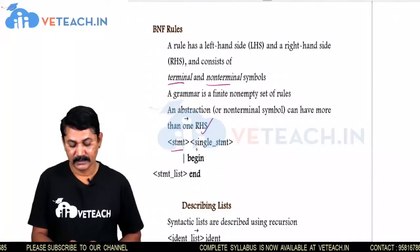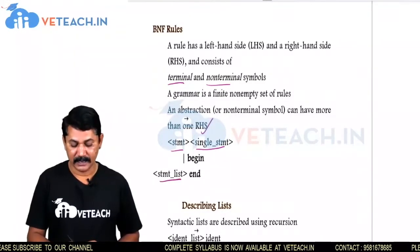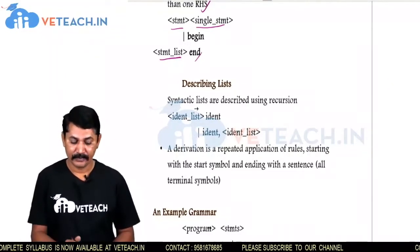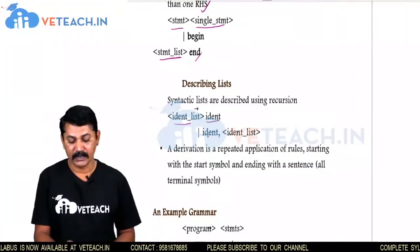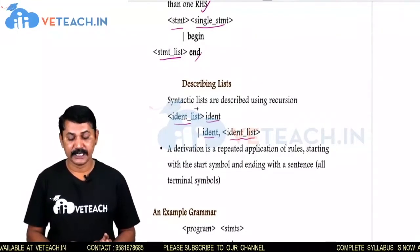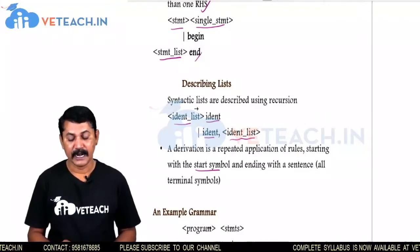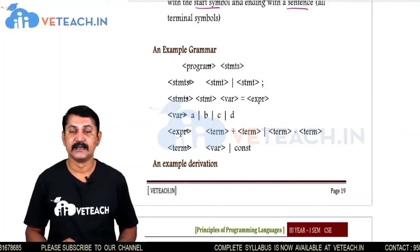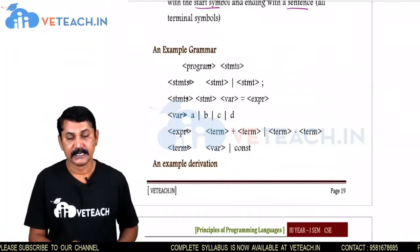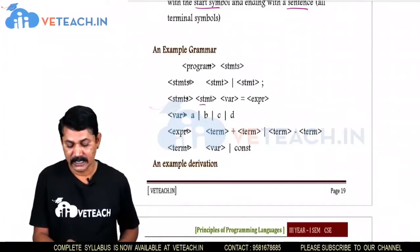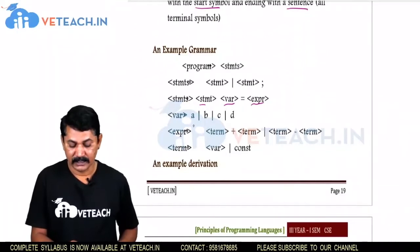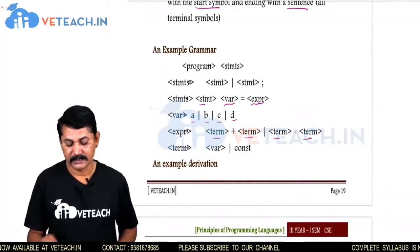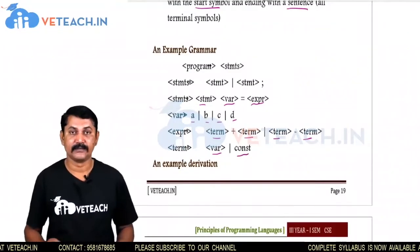A statement is a single statement that begins with a statement list and ends. Syntactic lists are described using recursion — recursion meaning implementation of itself. An identifier list contains identifier 1, identifier 2, and a closing of the identifier list. A derivation is the repeated application of rules starting with the start symbol and ending with the sentence. In an example grammar: program implies to statements; a statement is a variable equal to an expression where variables are A, B, C, D; expression goes as term plus term or term minus term; and a term can be a variable or constant.